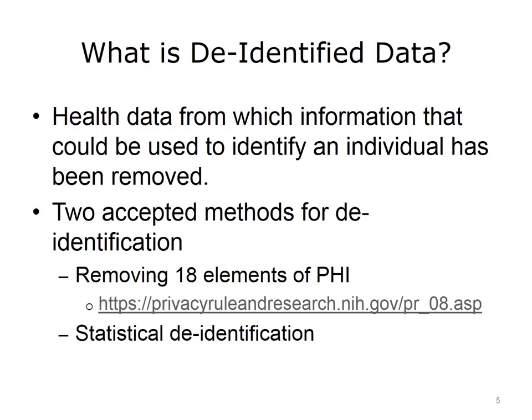De-identified health information is health data from which information that could be used to identify an individual has been removed. There are two accepted methods under HIPAA for data to be de-identified. One is to remove the 18 elements of protected health information, which are listed at the link provided here. The other is statistical de-identification by a person with appropriate knowledge of and experience with generally accepted statistical and scientific principles and methods for rendering information not individually identifiable.